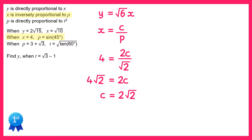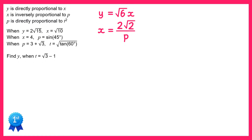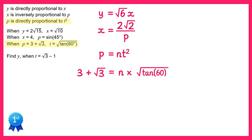We've found the value of c, so we can replace that in the formula: x equals 2 root 2 divided by p. Now we'll move on to the final statement — p is directly proportional to t squared, and we're given some values for p and t. So p will equal some constant, which I'll call n, times t squared. Let's replace p and t with the values given: p is 3 plus square root 3, and t is the square root of tan 60, but since it's t squared we'll square this.